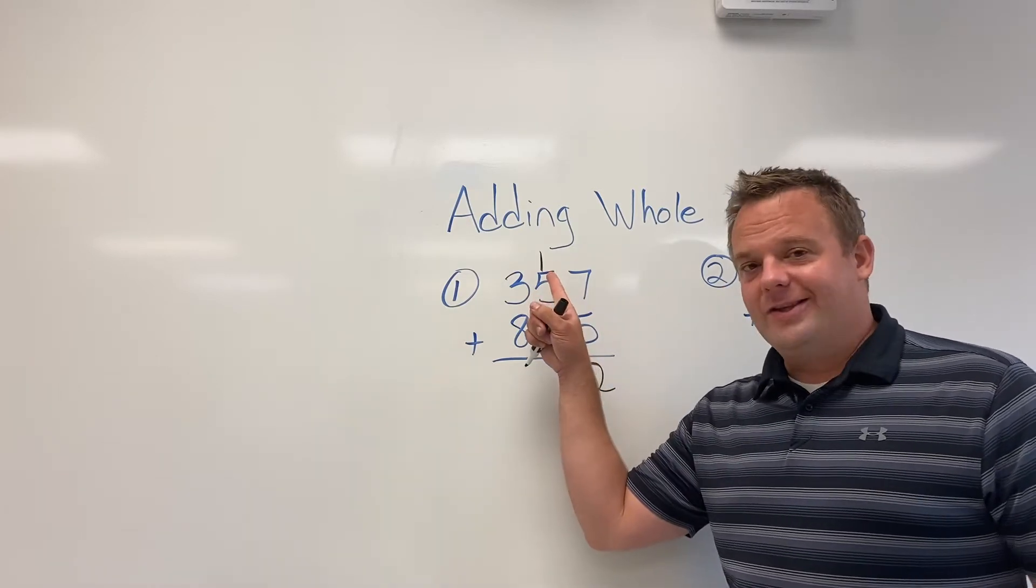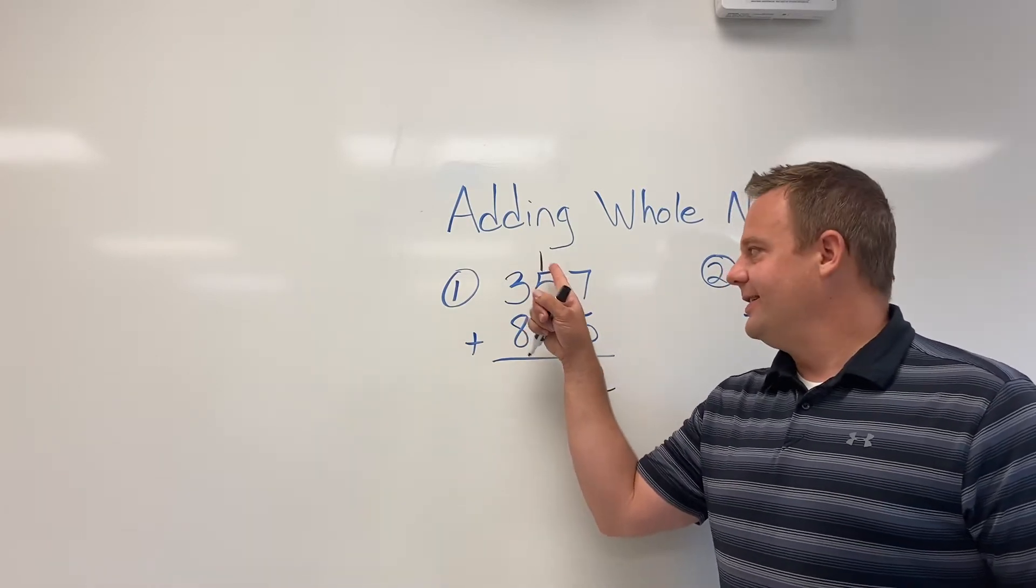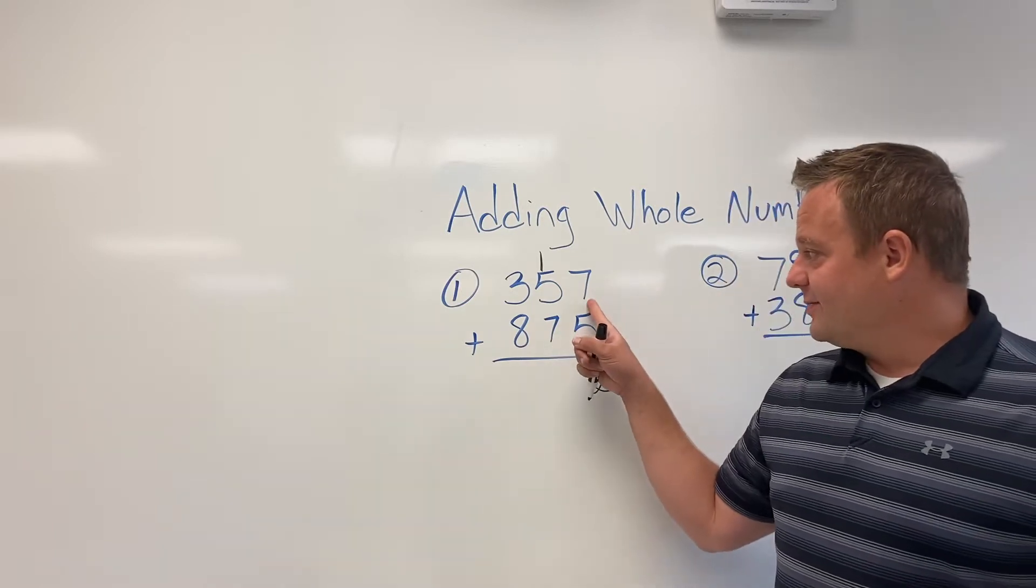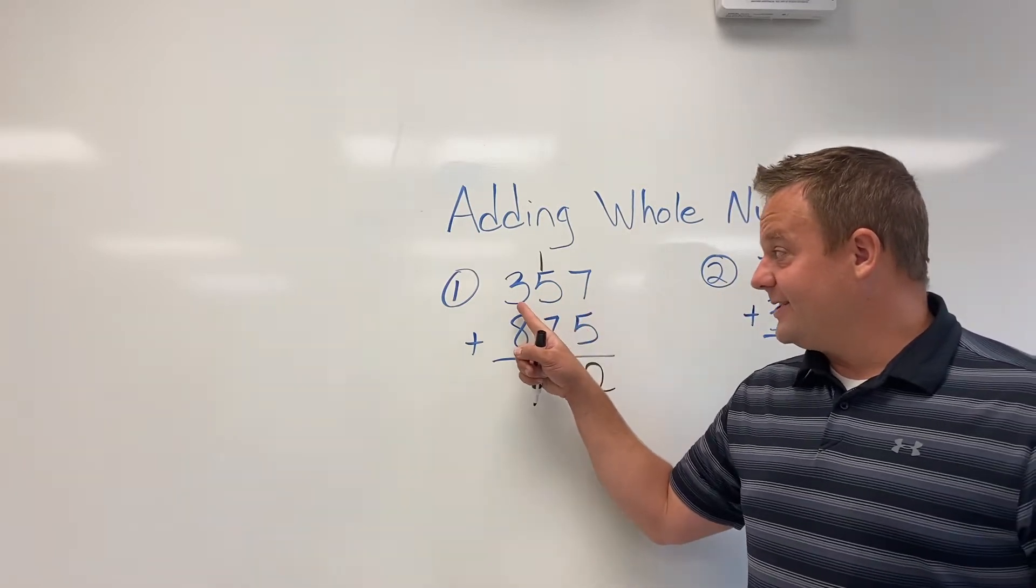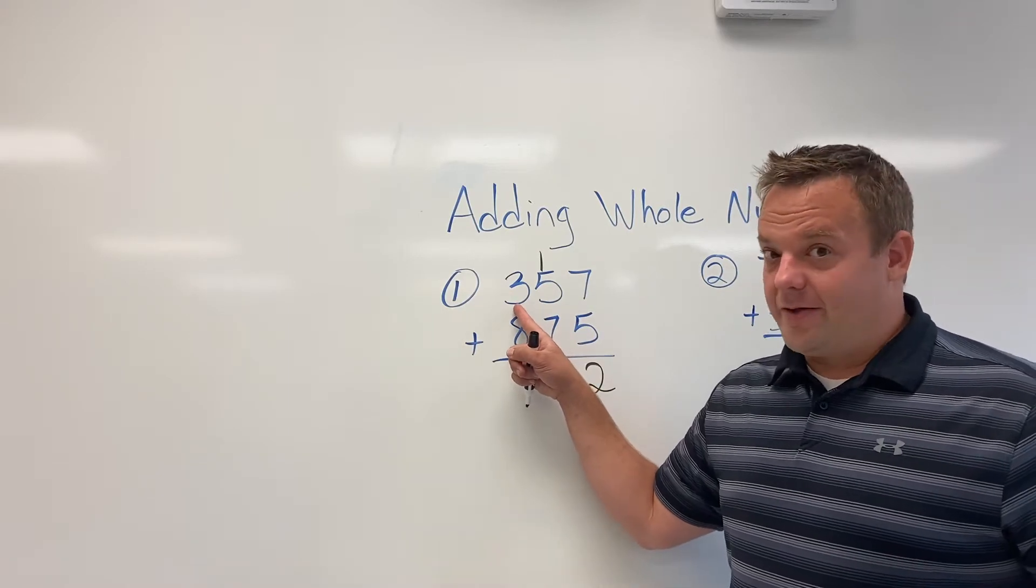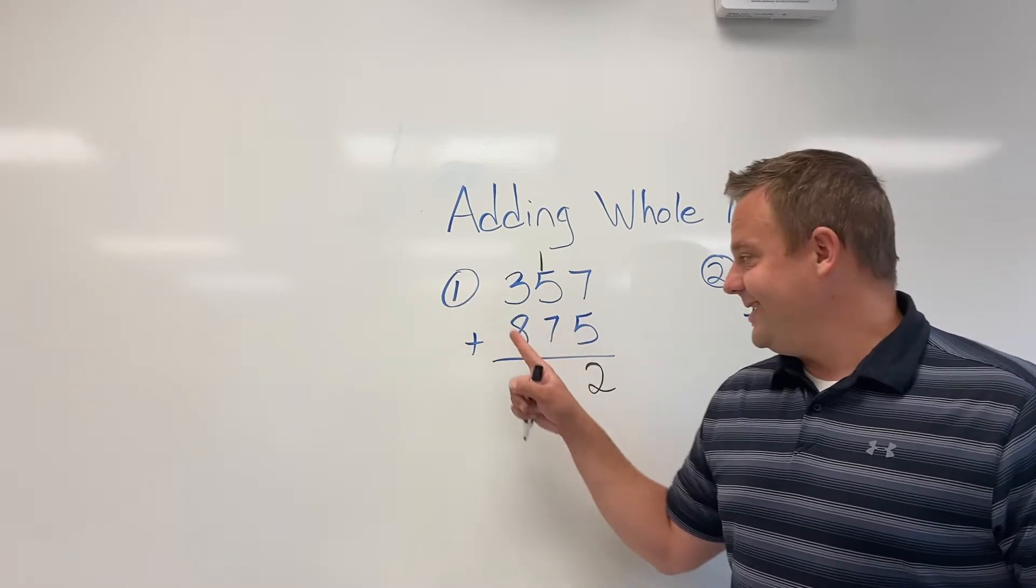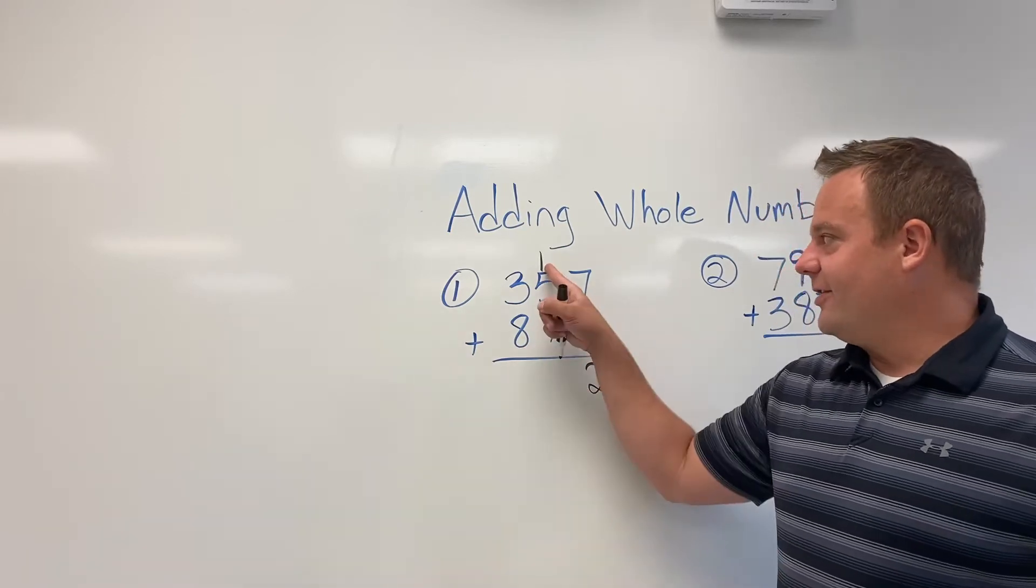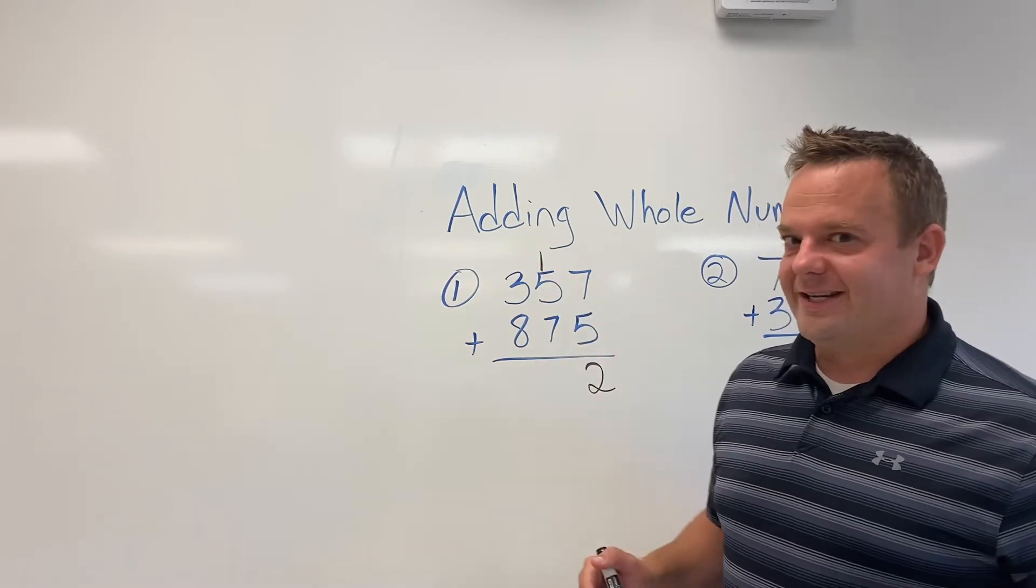So this isn't really a one. This is like 10. This is like 50 and that's like 70. So that's the ones place, the tens place and the hundreds place. The hundreds place here, this three isn't a three, but it's really 300. And this eight isn't an eight. It's really 800. So when I carry the one, I'm really carrying a 10.